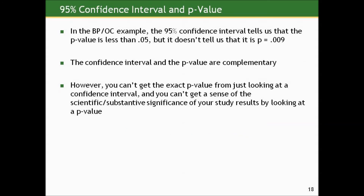What level of confidence interval would be comparable to an alpha level of 0.01, or an alpha level of 0.10? The confidence interval can't give you the exact p-value, but you can ascertain where it relates to some complementary cutoff. In the blood pressure oral contraceptive example, the 95% confidence interval — by virtue of excluding zero — tells us the p-value for testing the null of zero would be less than 0.05. But it doesn't tell us it's 0.009. You could do the hypothesis test to get the exact p-value, but if you're using a computer you get it all at once anyway. The confidence interval and p-value are complementary, but you can't get an exact p-value from just looking at a confidence interval.